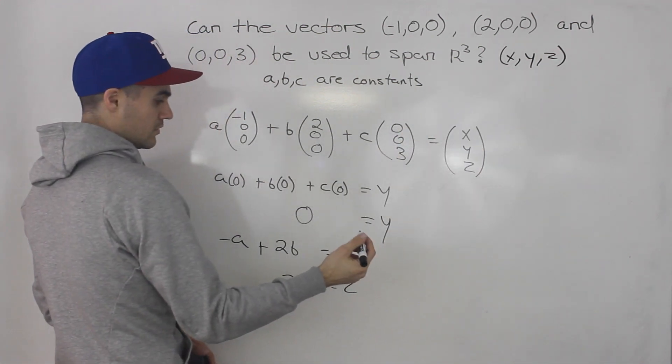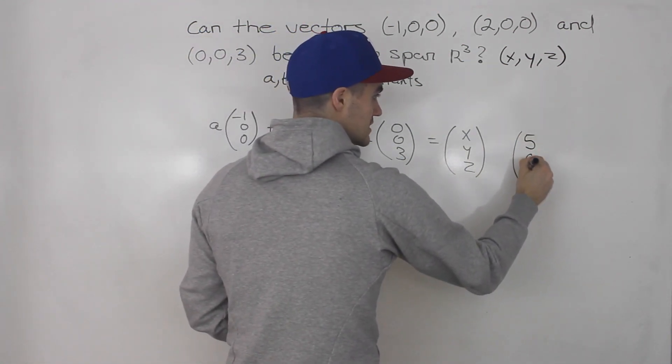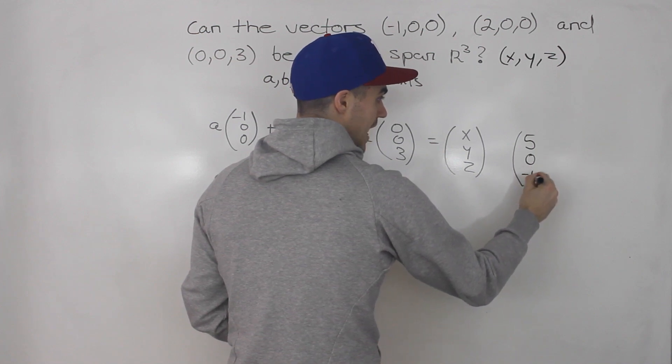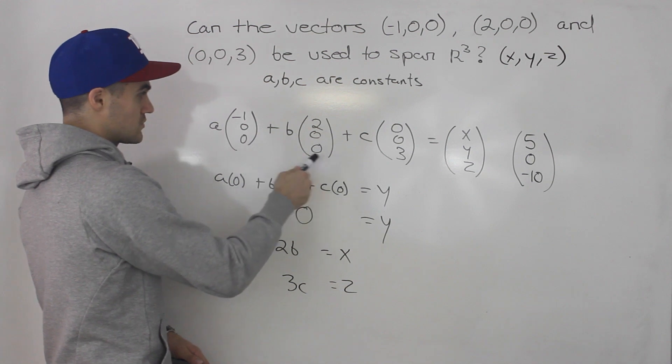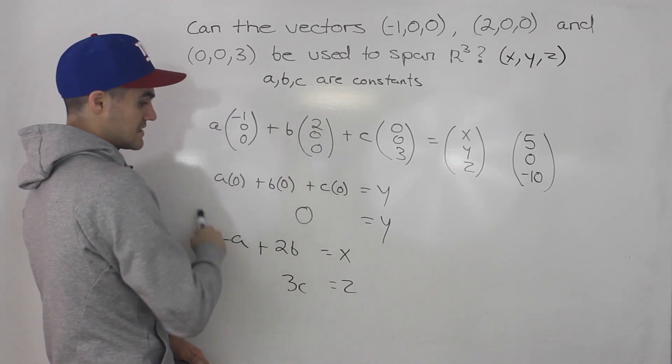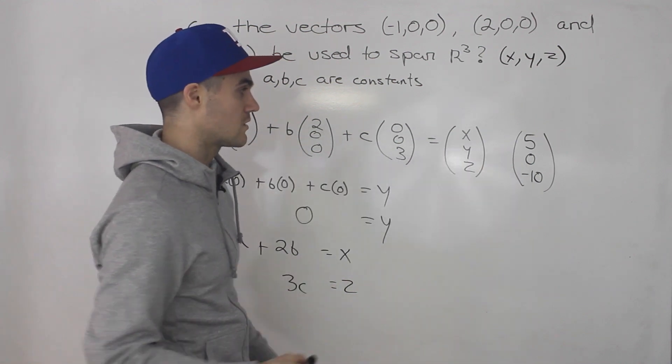So for example, a vector maybe like (5, 0, -10). Okay? We can make a linear combination with these three vectors. We could find constants a, b, and c that work to give us that because that y value is zero.